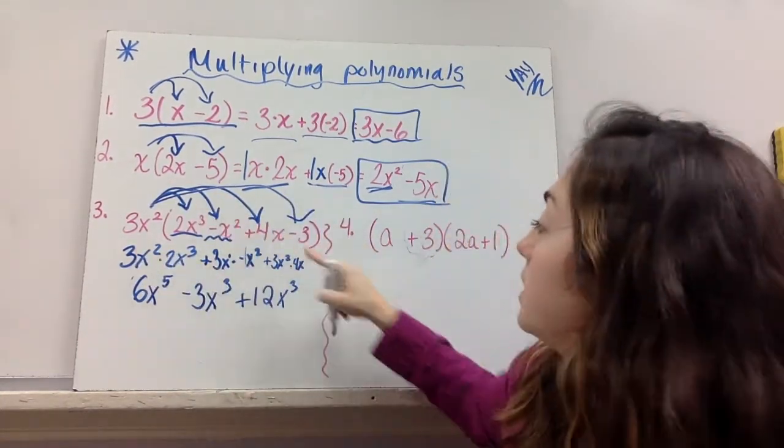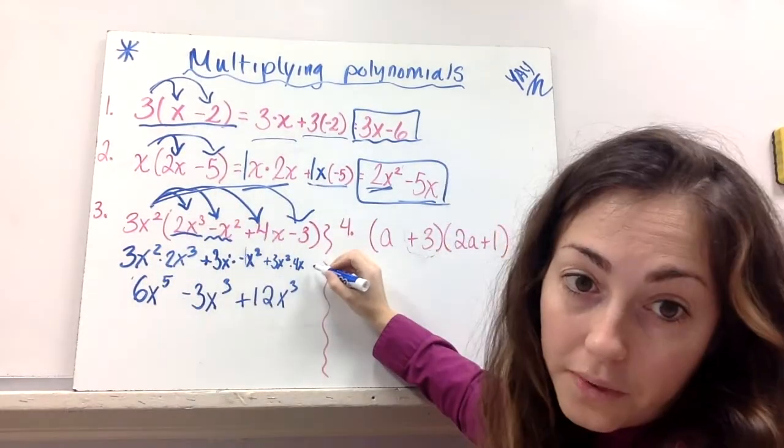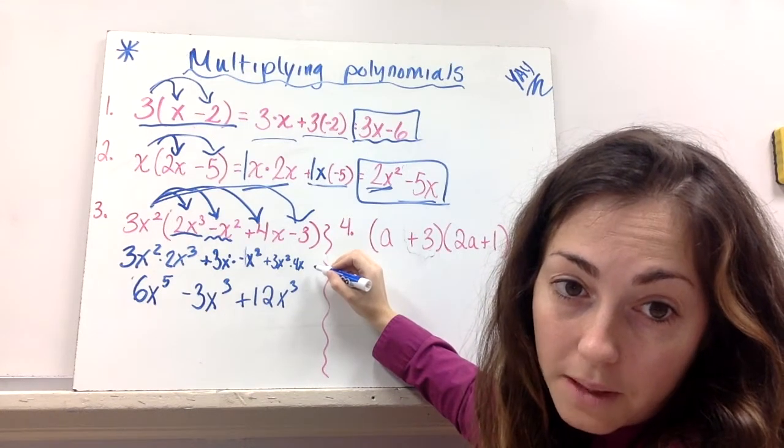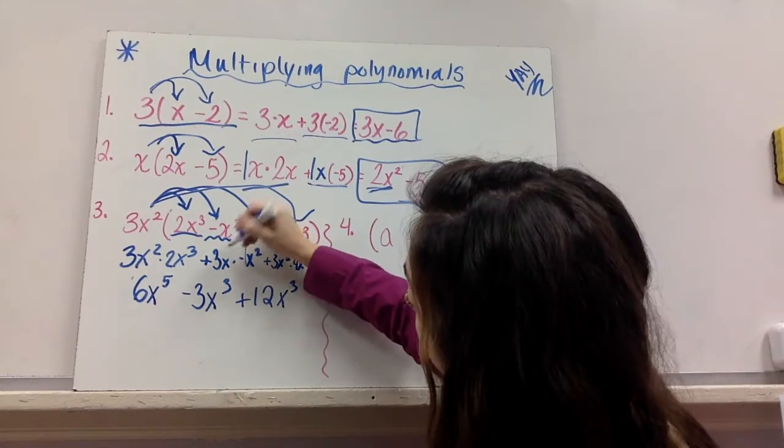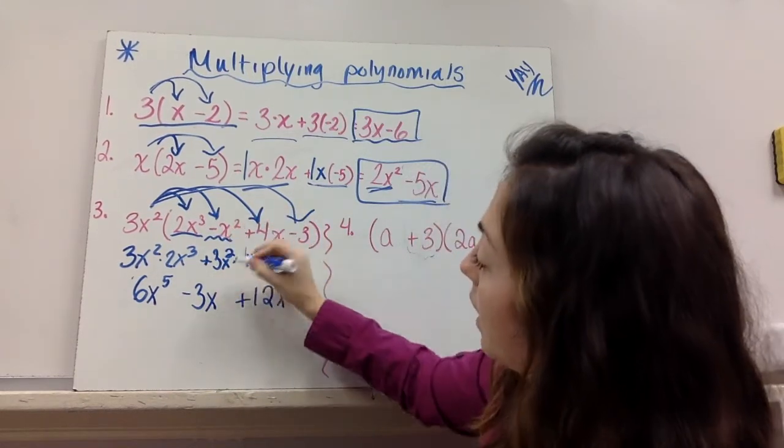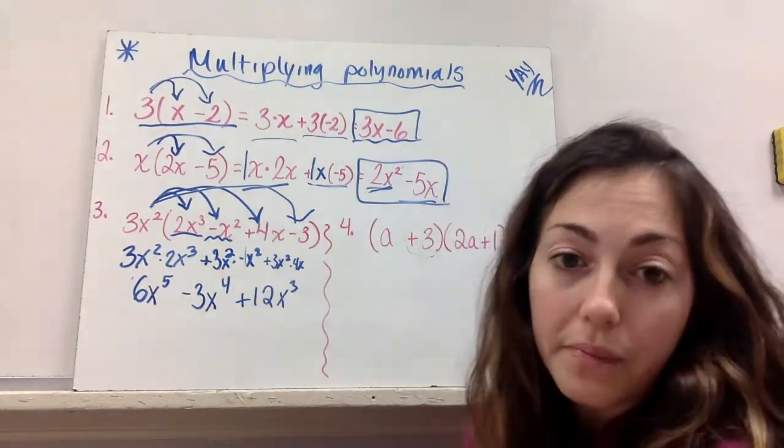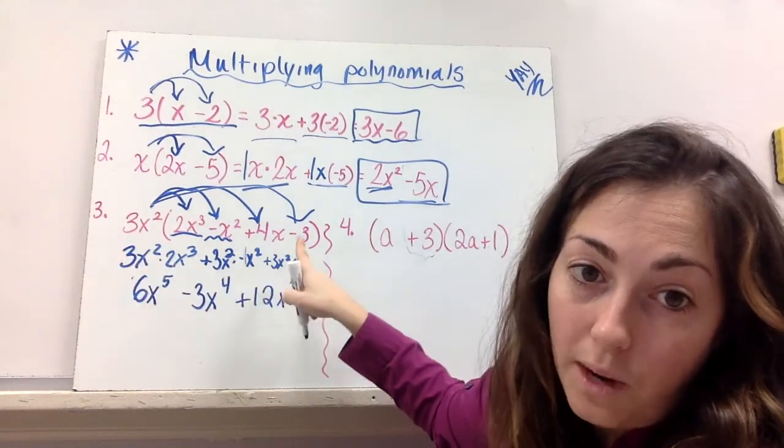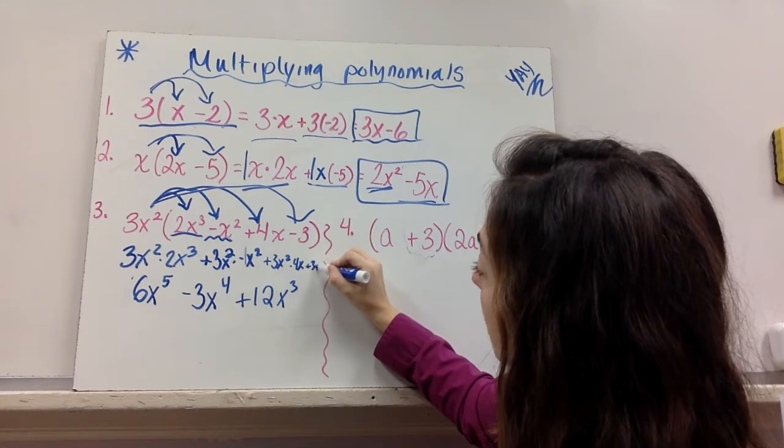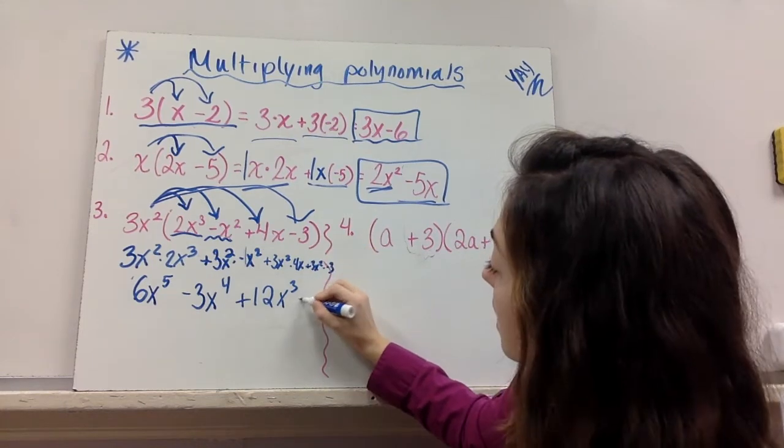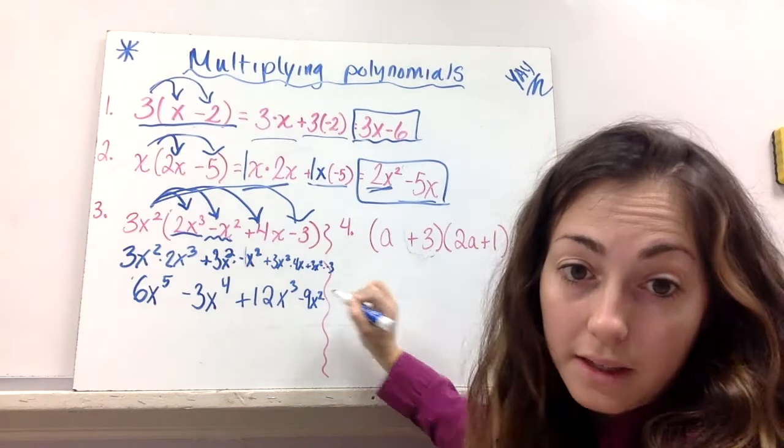Now one more. 3x squared times negative 3. Oh, I messed up somewhere, huh? Yeah, this was not a 3x. That was a 3x squared. Making that a 4. Cool. Now back to where we were. 3x squared times negative 3 is 3x squared times negative 3. Negative 9x squared.